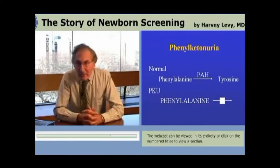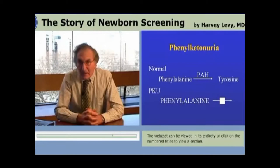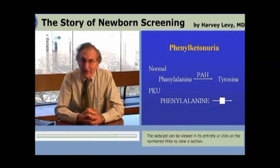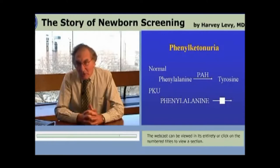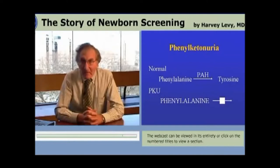The third event that led to newborn screening — a very important event — was the discovery of a diet for PKU. In 1953, some 19 years after the discovery of PKU, it was discovered by a German physician who was a fellow in training at the Children's Hospital in Birmingham, England. Horst Bickel developed a diet that showed there could be biochemical correction of the abnormalities in PKU.